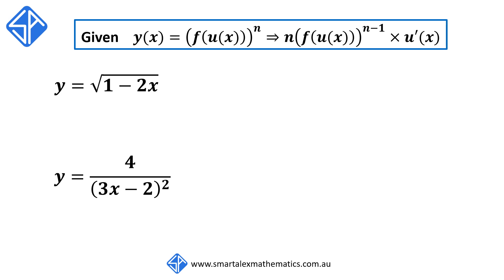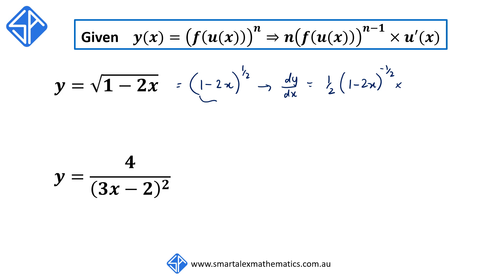Our next example: y is equal to the square root of 1 minus 2x. We can rewrite this as 1 minus 2x to the power of a half. So when we differentiate this, the power of a half comes to the front, we then reduce the original power of a half by 1, so a half minus 1 is negative a half, and we also have to multiply by the derivative of what's inside the bracket, which is negative 2. So this simplifies to negative 1 over the square root of 1 minus 2x.